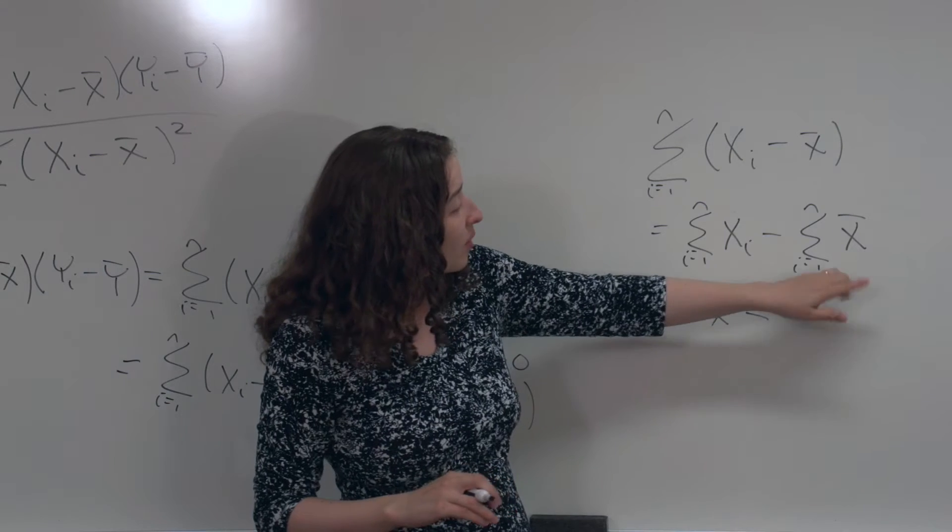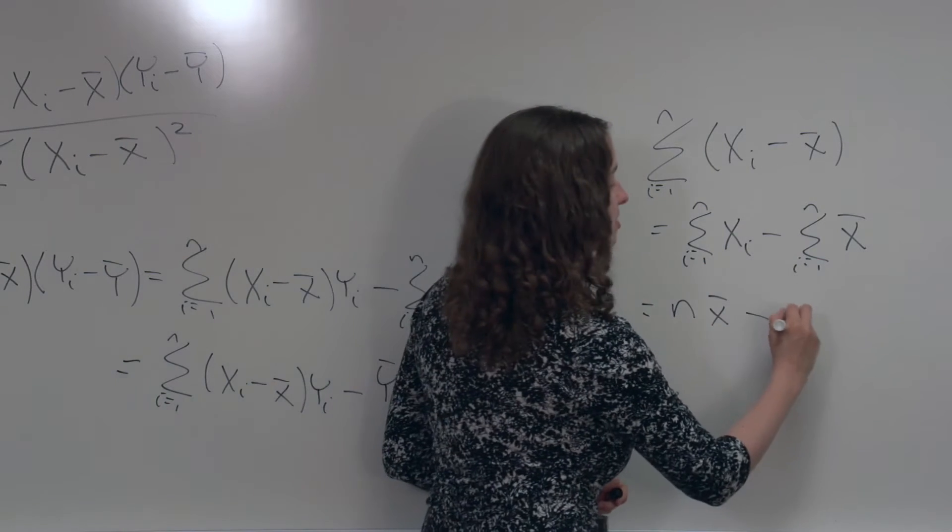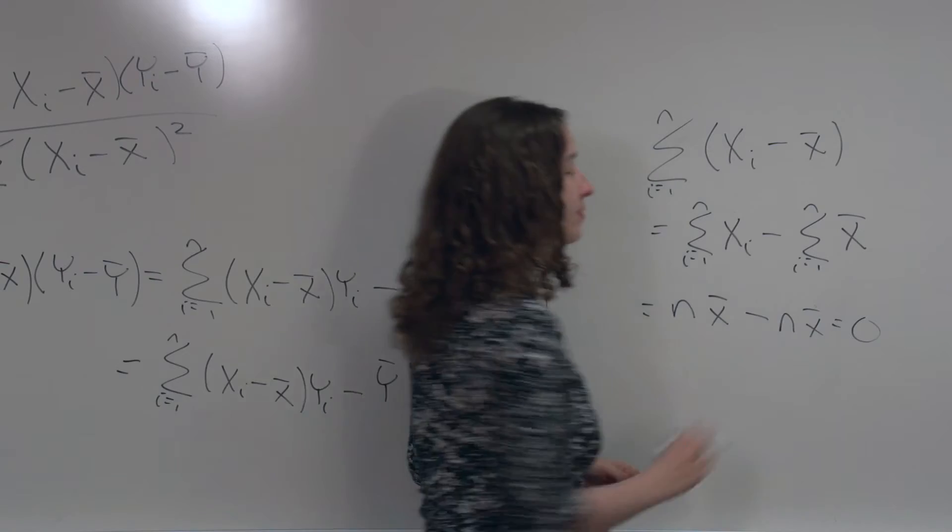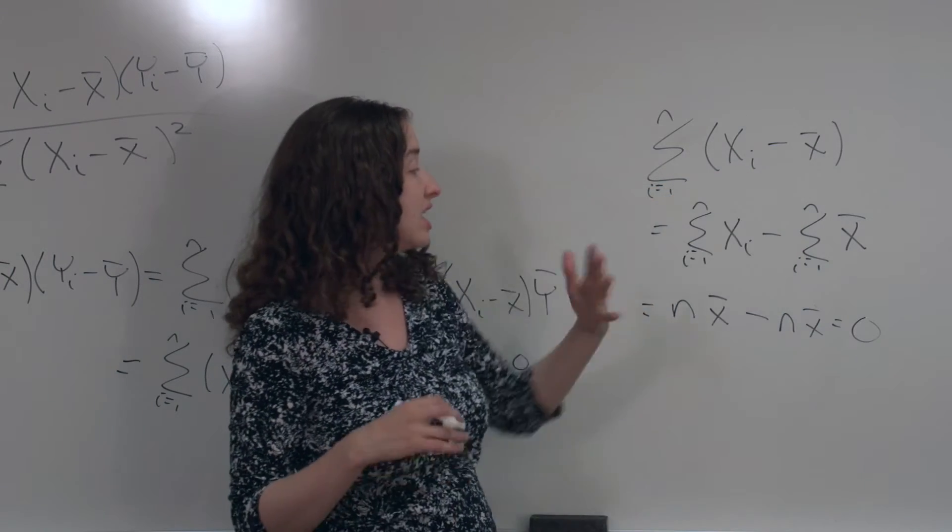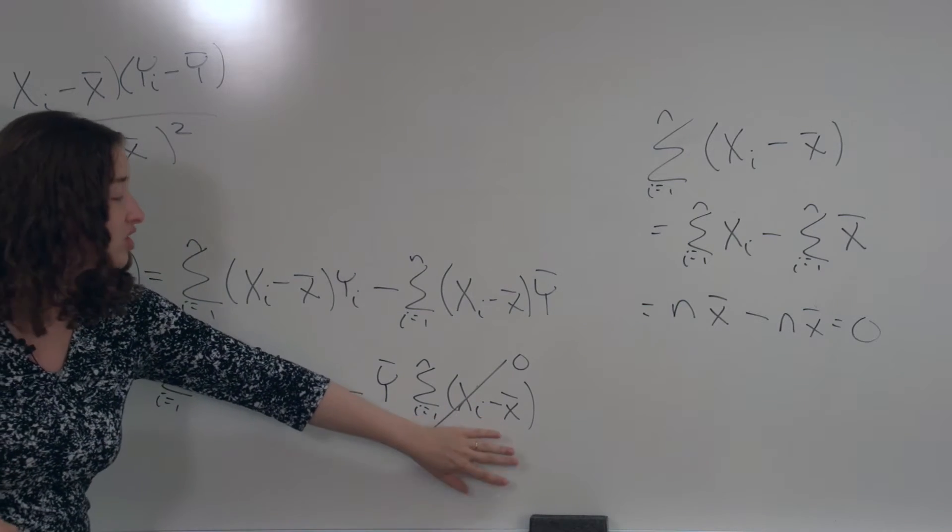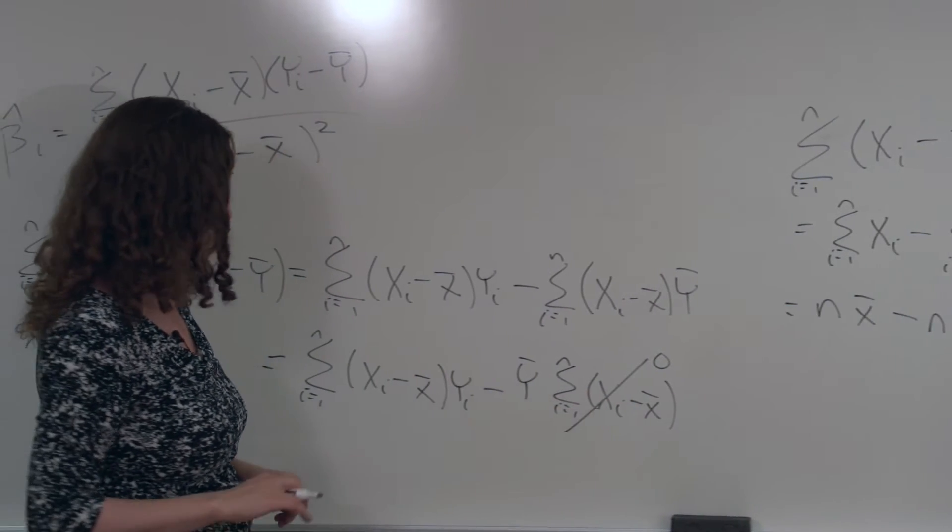And what's happening here? Well, if I sum up x bar n times, that's also equal to n x bar. The sum of the differences between each point and the average is just 0. This quantity here is just 0 because I was able to factor out that y bar.